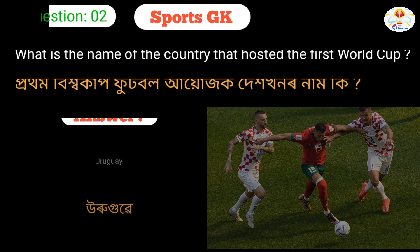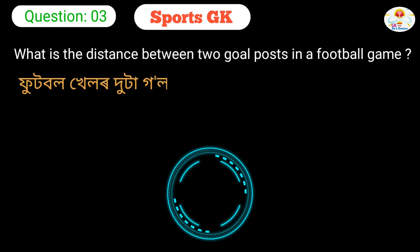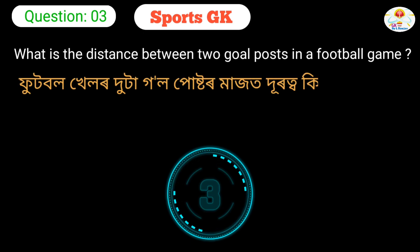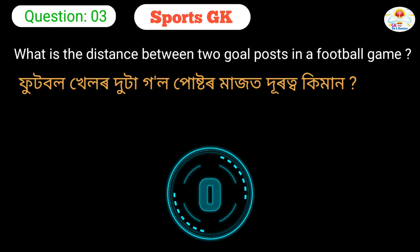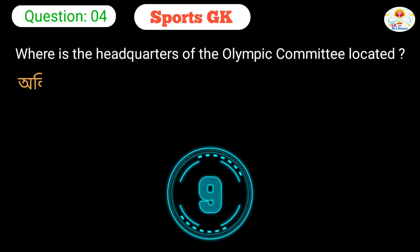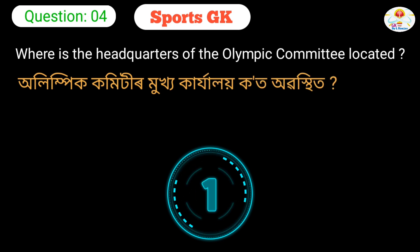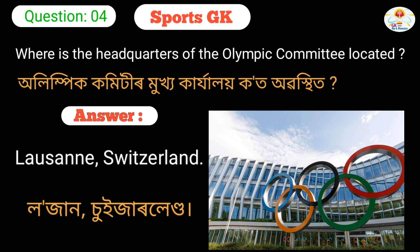Question 3: What is the distance between two goal posts in a football game? Answer: 7.32 meters. Question 4: Where is the headquarters of the Olympic Committee located? Answer: Lausanne, Switzerland.